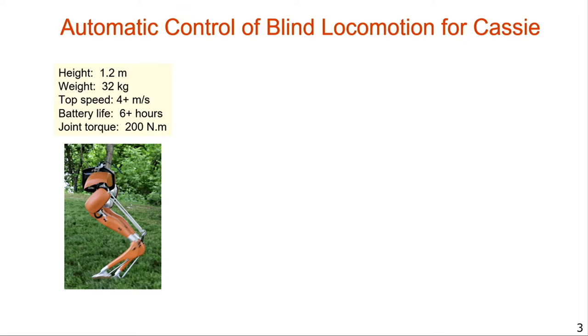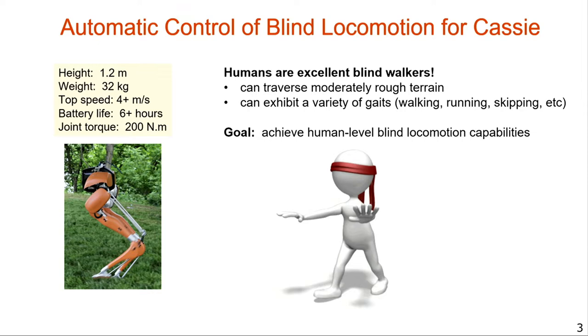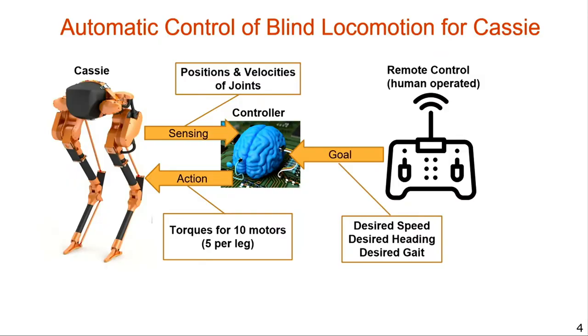Since Cassie is blind, we input control via remote control specifying desired speed, heading, and desired gait. Cassie's input is just proprioceptive data — velocities and positions of joints — and we output ten torques to the motors, five per leg. Our lab explores the limits of sim-to-real reinforcement learning for this problem. We learn in simulation using a reward signal that tells us how well Cassie matches the remote control input.